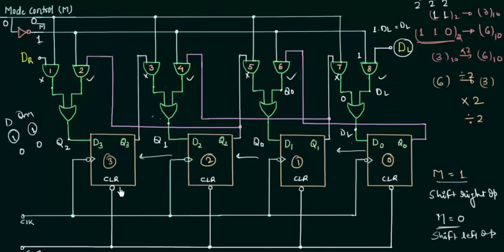The data shifts to the right when M equals 1 and to the left when M equals 0 — this is how the bi-directional shift register works. We can perform multiplication and division using this shift register. It is a very important topic likely to appear in your exam. You just need to know how logic gates work, a little about the D flip-flop and how data is stored, and basics about registers.